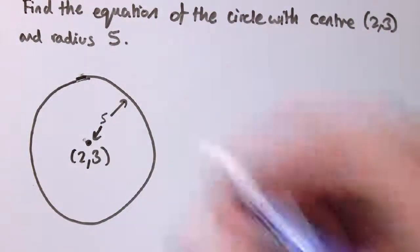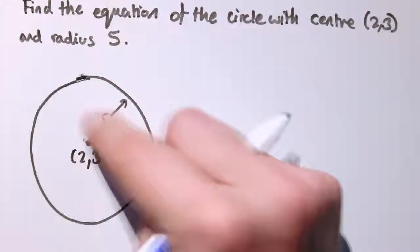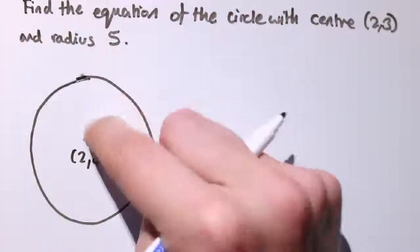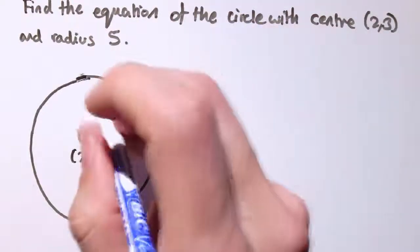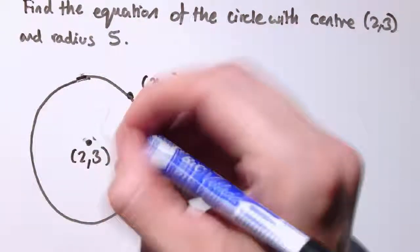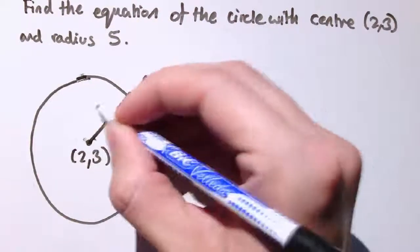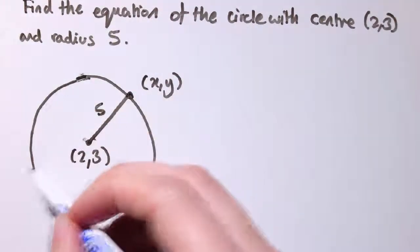So if I were to take a general point here on the circle, let's call it x, y, then its distance from 2, 3 would be 5. That would be true anywhere around the circle.